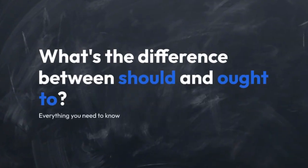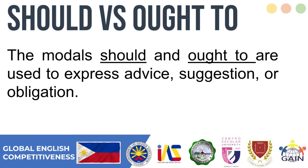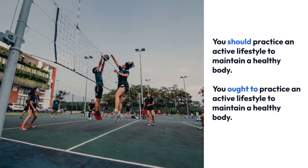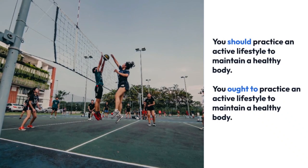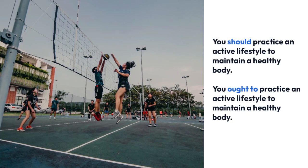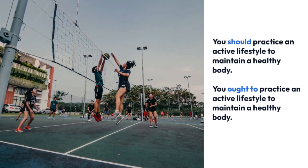What's the difference between the modal should and ought to? The modal should and ought to are used to express advice, suggestions, or obligations. Although they are similar in meaning, they have subtle differences. Here are some examples: You should practice an active lifestyle to maintain a healthy body. You ought to practice an active lifestyle to maintain a healthy body.